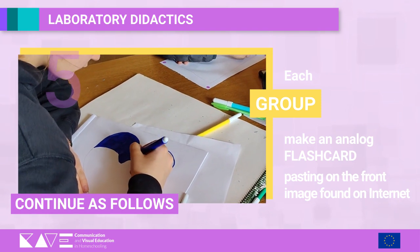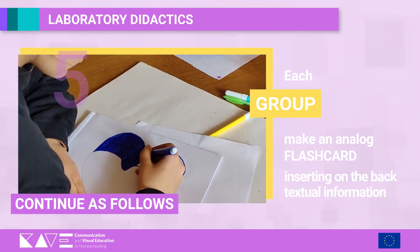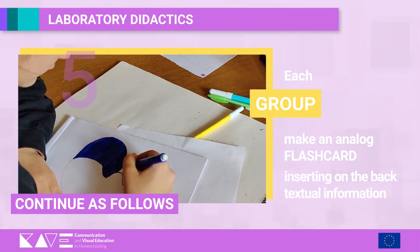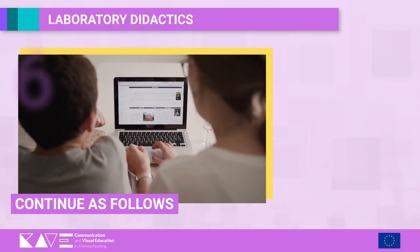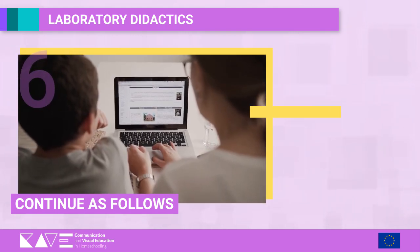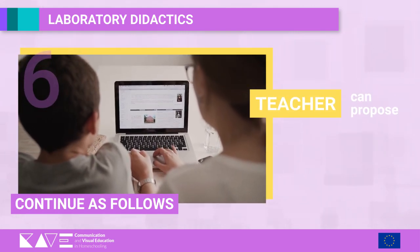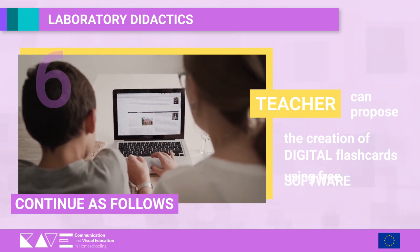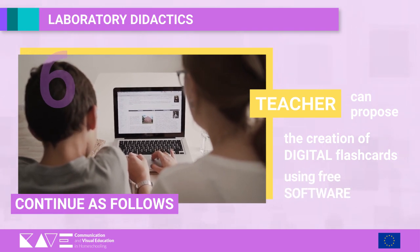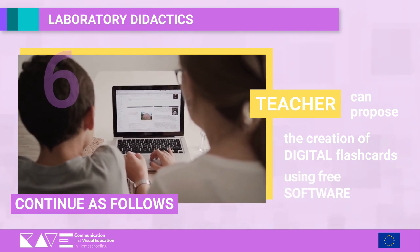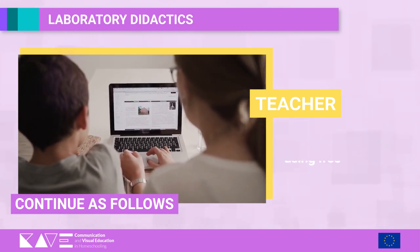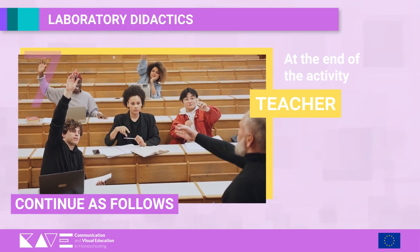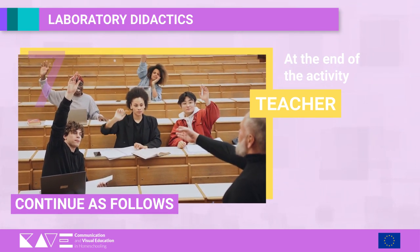Step five: make an analog flashcard on cardboard, printing and pasting on the front of the card the image found on the internet, and inserting on the back the corresponding textual information. Step six: the teacher can then propose the creation of digital flashcards using free software such as Canva.